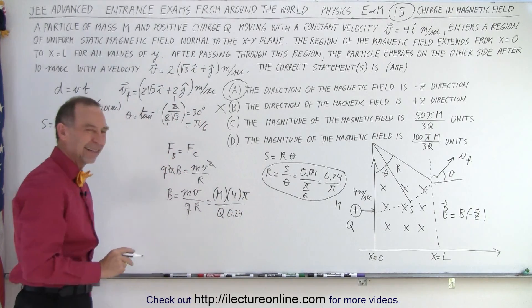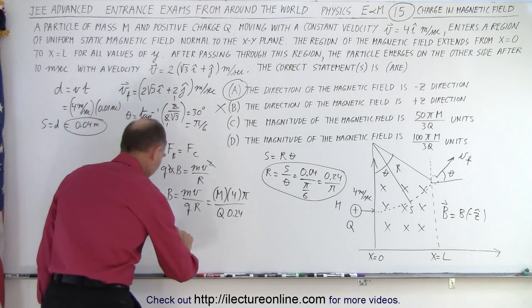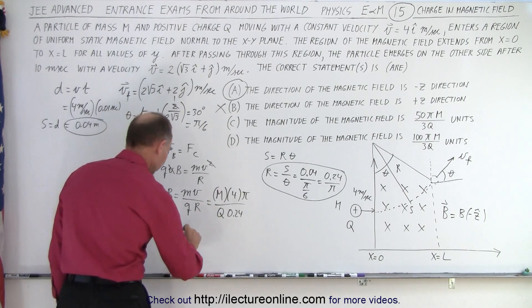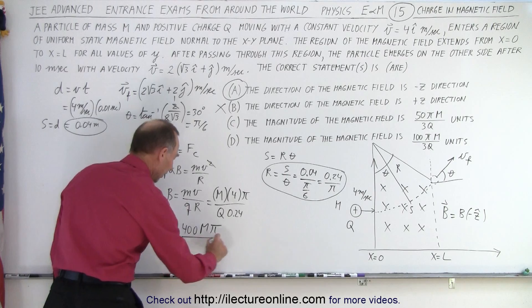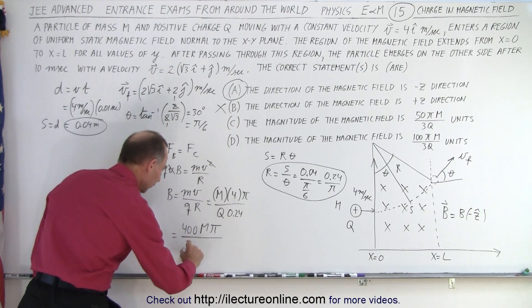So we get 400 m pi divided by 24 q. If I now divide the top and the bottom by 8, that gives me 50 m pi divided by 3 q.